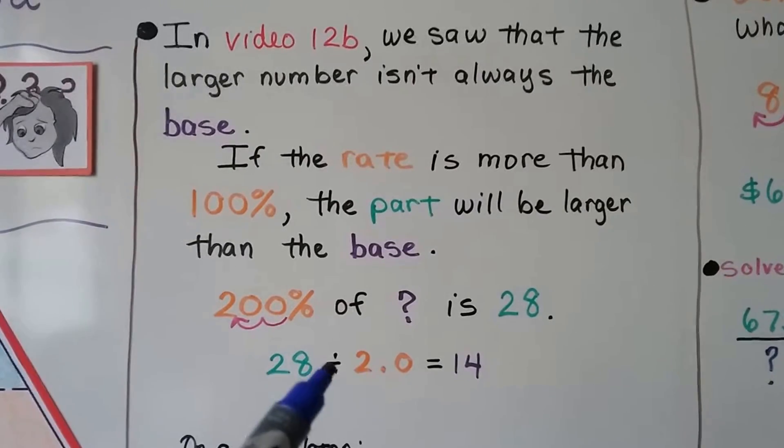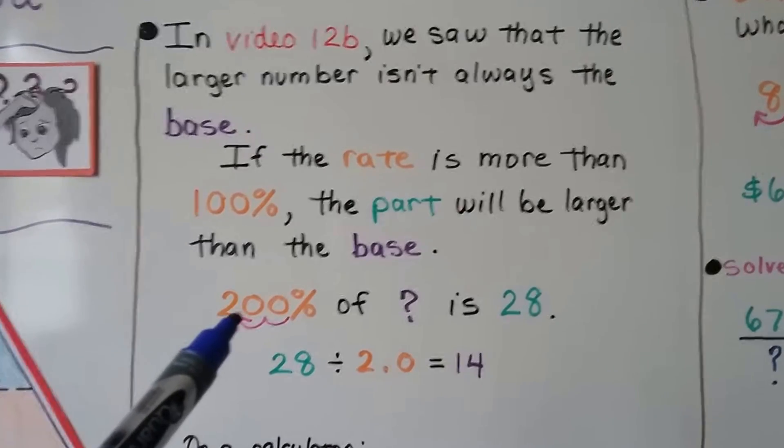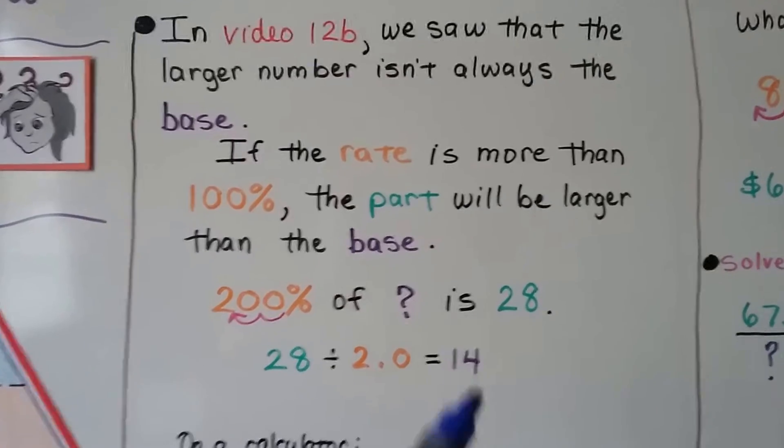We do 28 divided by 2. We don't need that .0, do we, when we move the decimal place over to turn this into a decimal. It's just a 2. We get a 14.